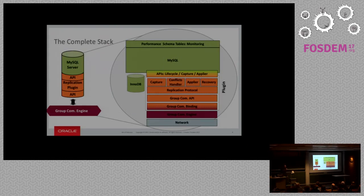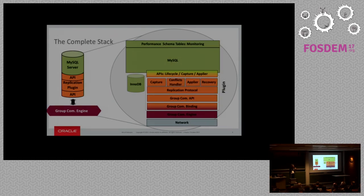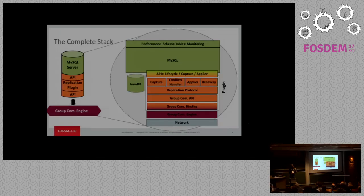When the changes are propagated to remote nodes, there is a certification process that verifies whether there are conflicts among concurrent transactions executed on other nodes. If there is a conflict, the transaction is rolled back. If there is no conflict, it commits. A remote transaction is committed through an applier, which gets all the updates — called a write set — and applies them on the remote nodes. On the originating machine, we simply reply to the end user whether the transaction committed or was aborted.